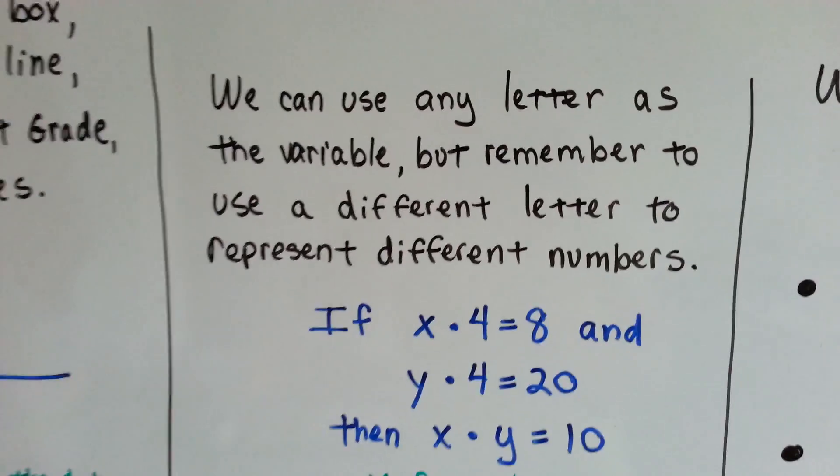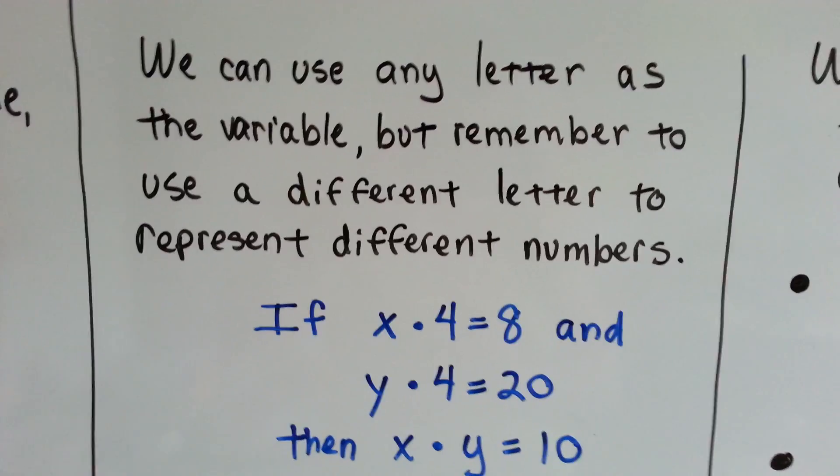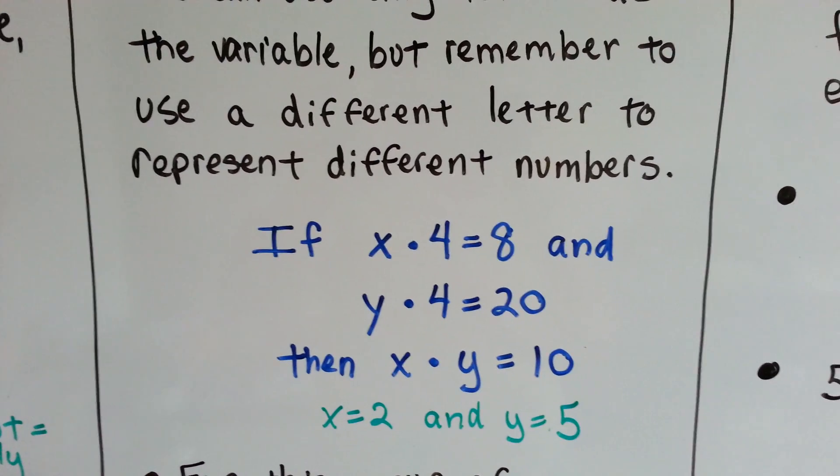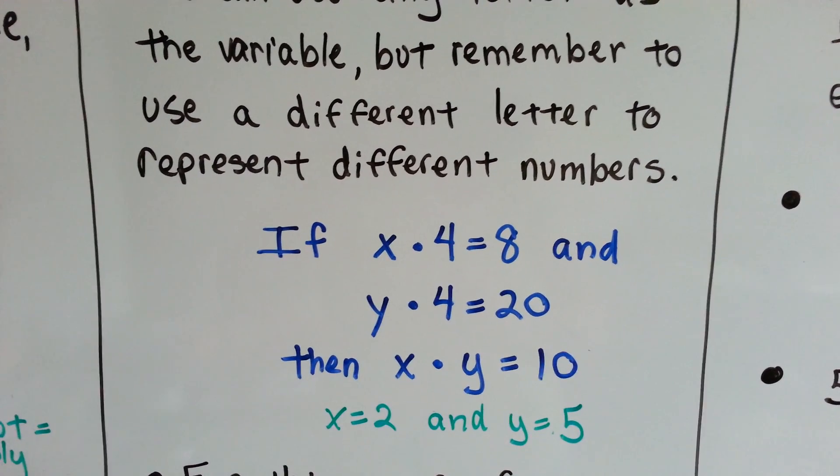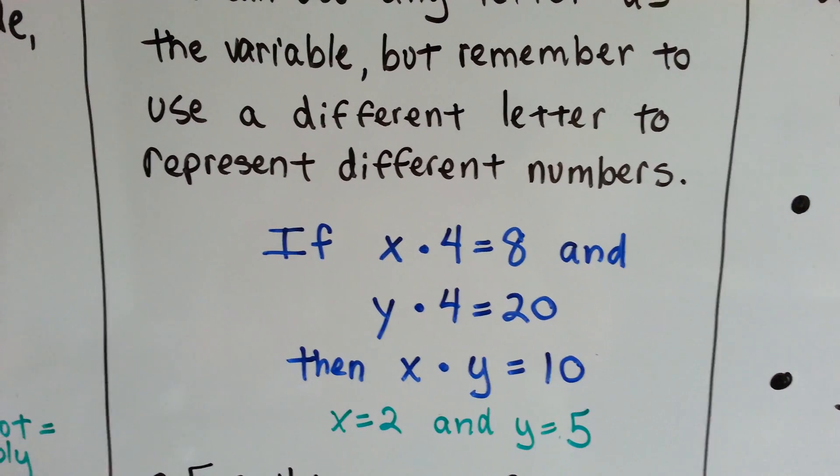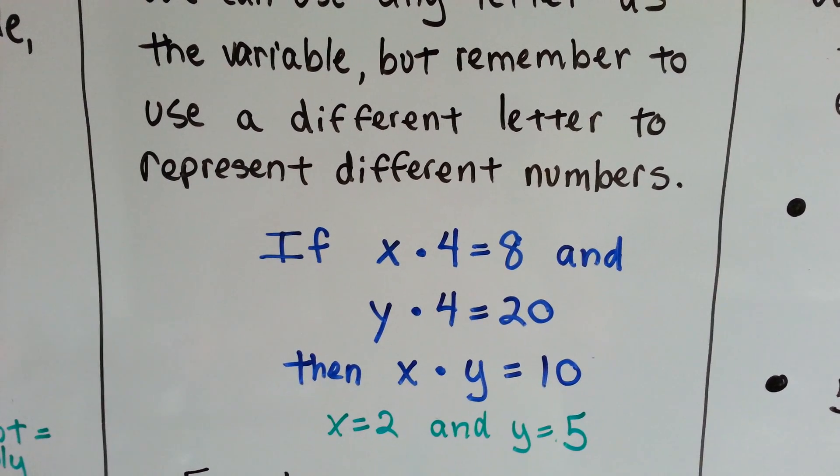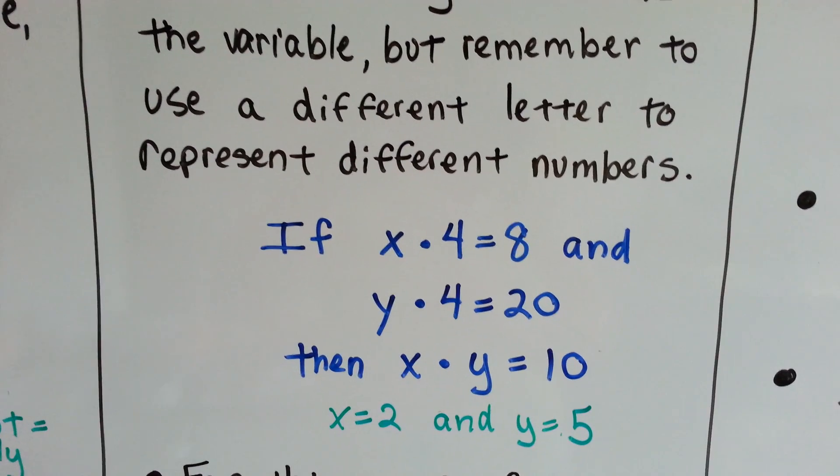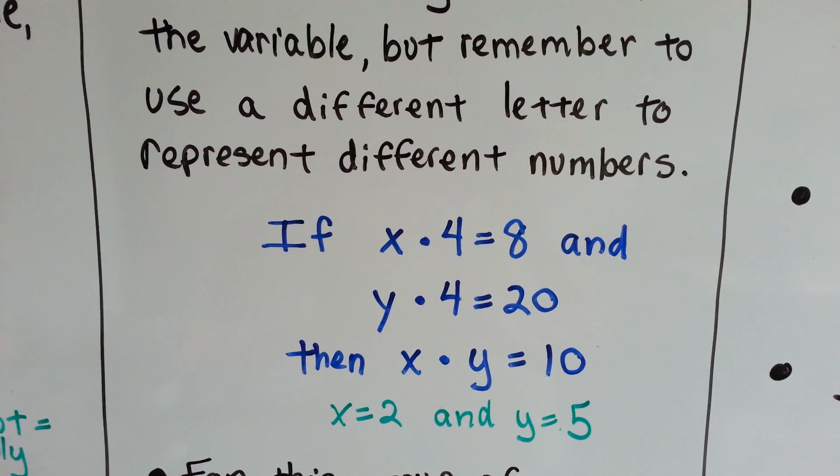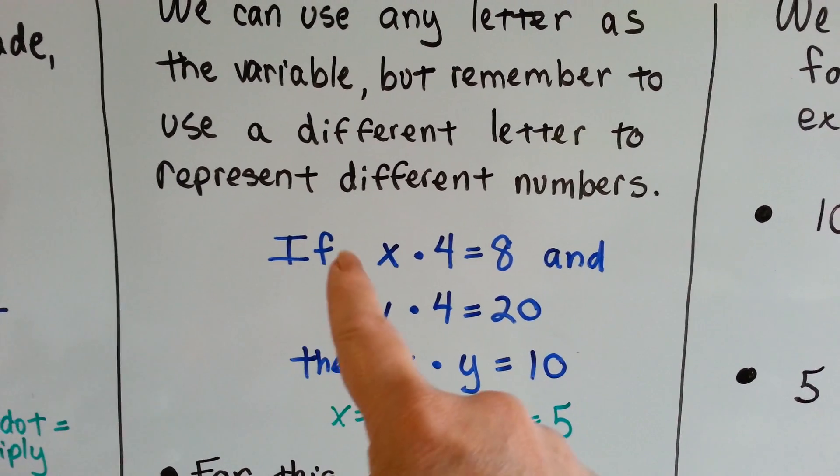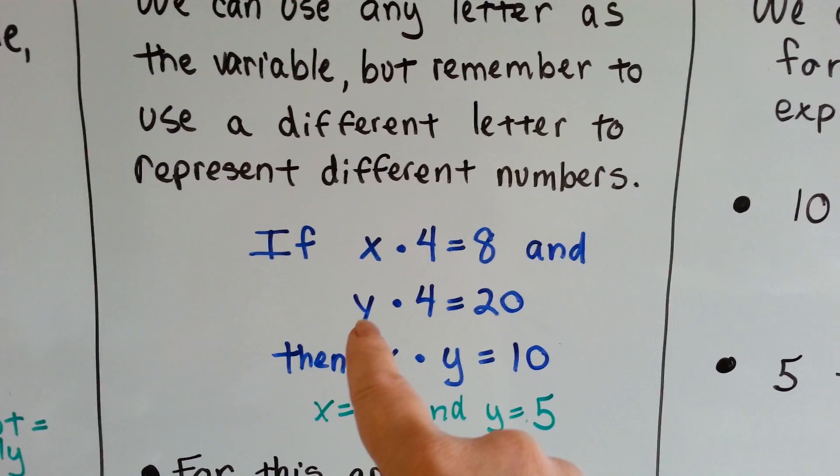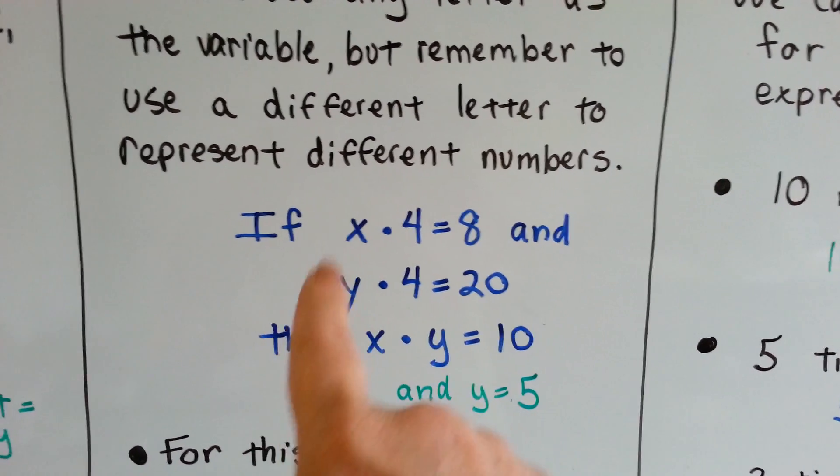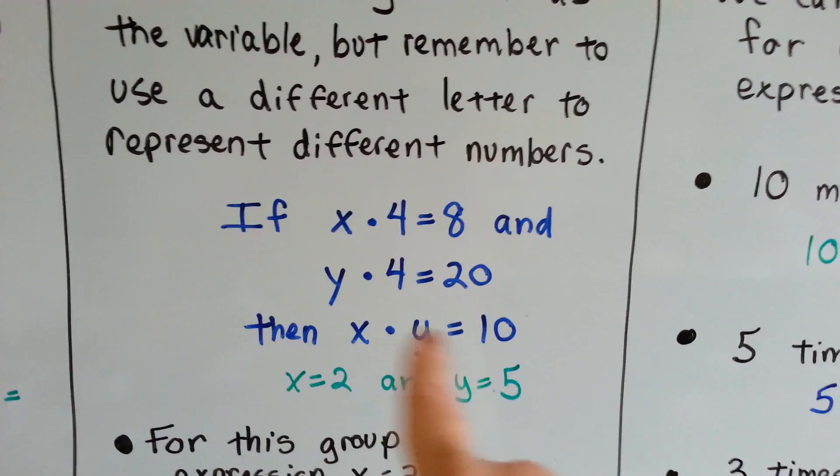We can use any letter as the variable, but remember to use a different letter to represent different numbers. If x times 4 equals 8, do you know what x is? And y times 4 equals 20, then x times y equals 10. So you can figure this out that this must be a 2, that must be a 5, because 5 times 4 is 20, so 2 times 5 would be 10.